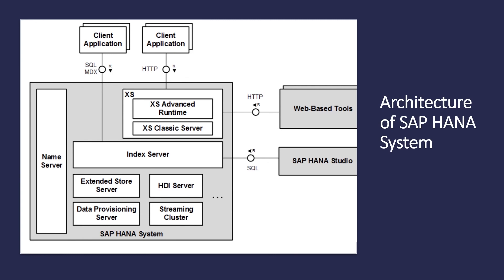The streaming cluster is part of the SAP HANA Smart Data Streaming option. Smart Data Streaming extends SAP HANA with capabilities of the SAP Event Stream Processor for consuming data streams and for complex event processing. This concludes the overview of SAP HANA architecture and its server components.